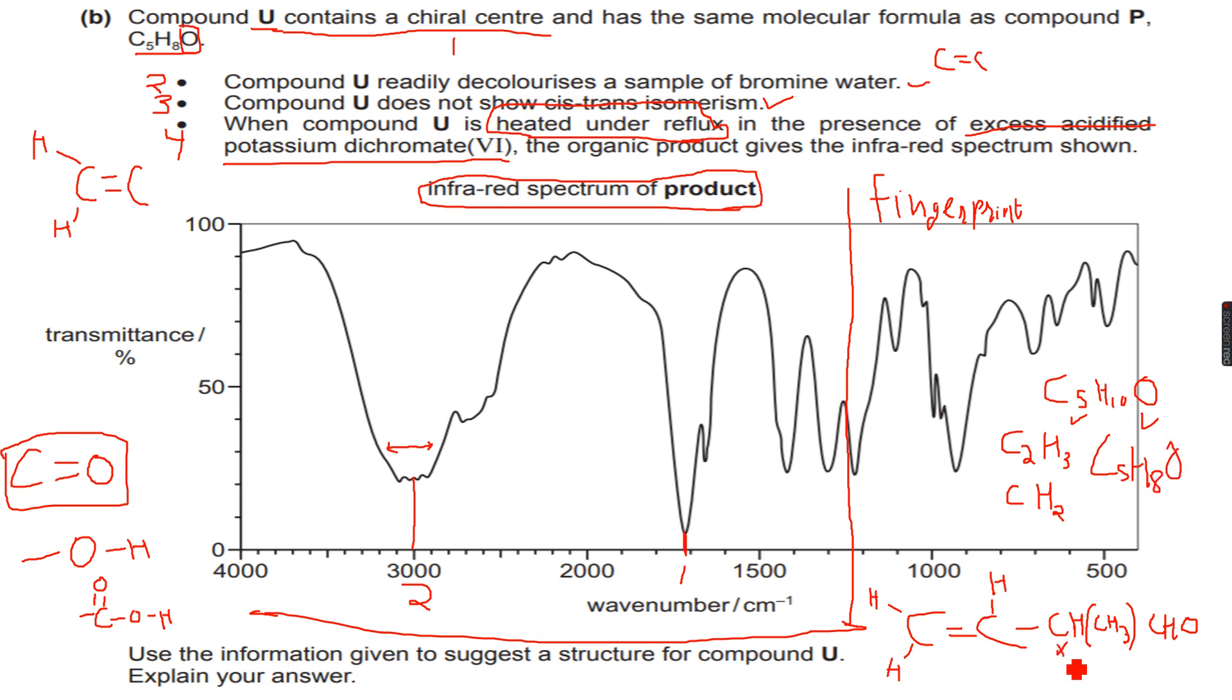So, and I'm making a star over here because this is the chiral center. You can see this is chiral because it's attached to an aldehyde group. It's attached to a methyl group, CH3. It's attached to a hydrogen and then it's attached to this group. So it's attached to four different groups. So it can be called the chiral center. So we have fulfilled the condition of chiral center.